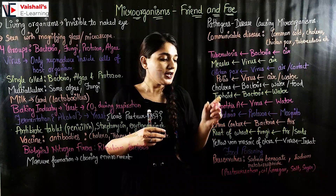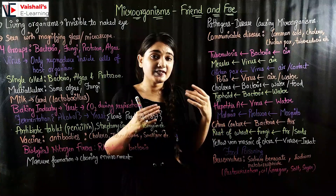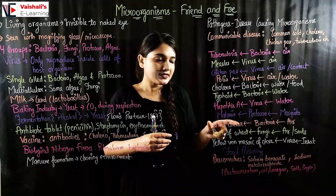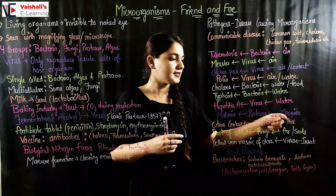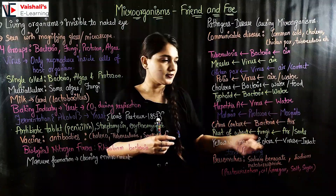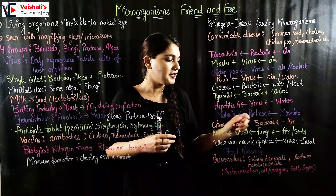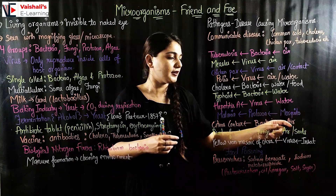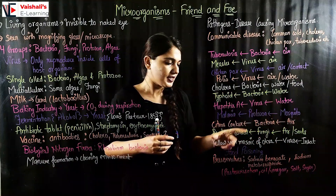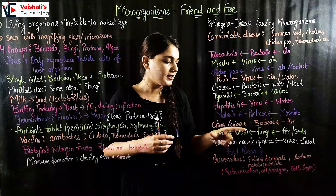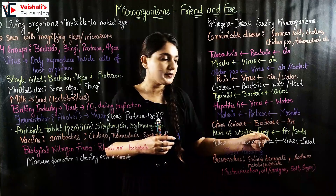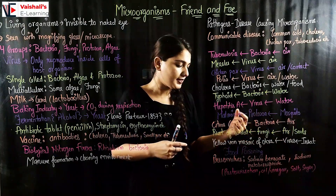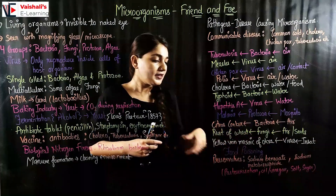We also have plant diseases caused by microorganisms. Citrus canker is a bacterial disease with air as the mode of transmission. Rust of wheat is a fungal disease spread through air or seeds. Yellow vein mosaic of okra (bhindi) is caused by a virus and spreads through insects.